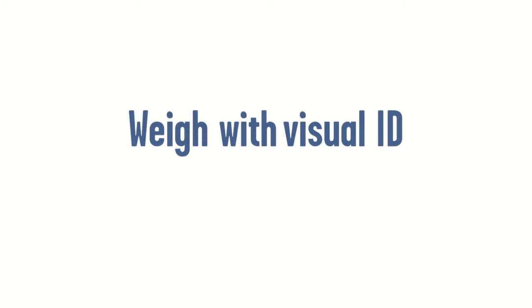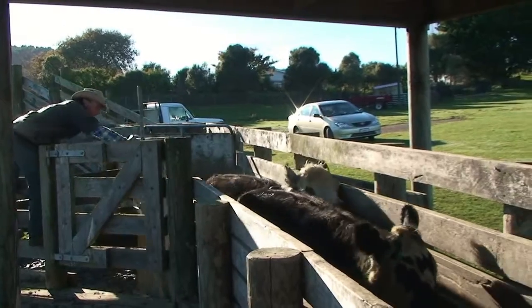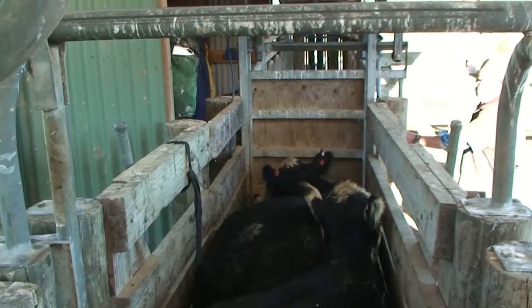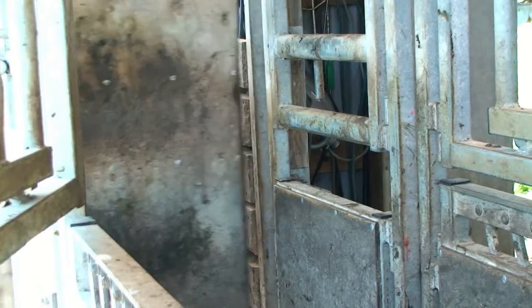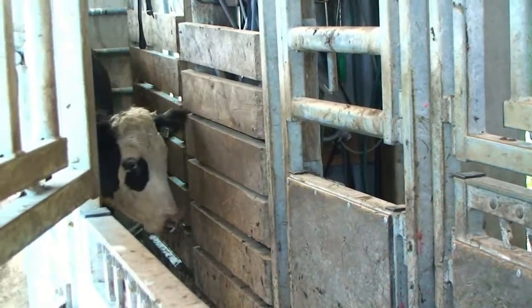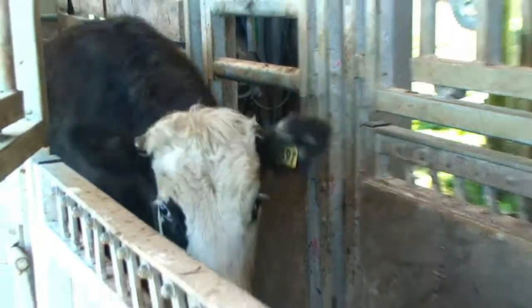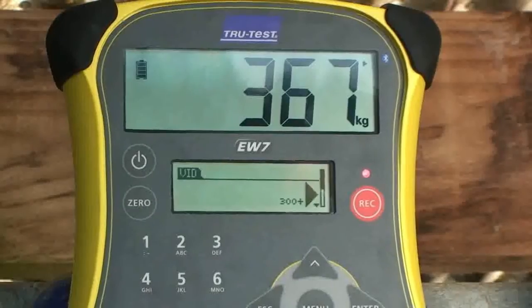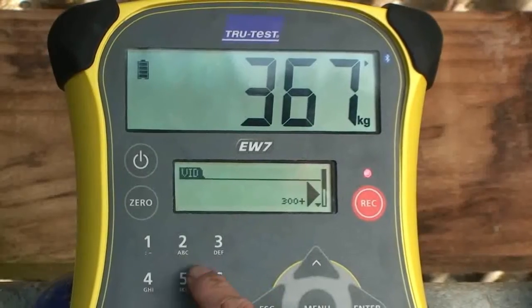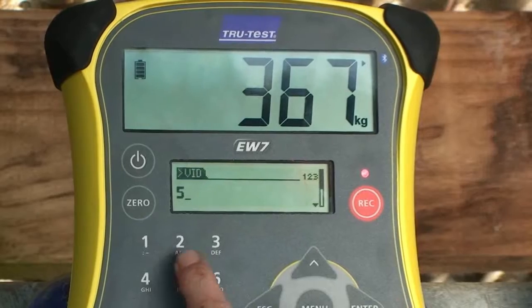When weighing with a Visual ID, as the animal enters the crush, the EasyWay 7 quickly and accurately captures the weight even if the animal is still moving, and will illuminate the red stable light.